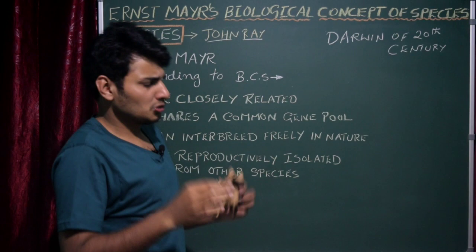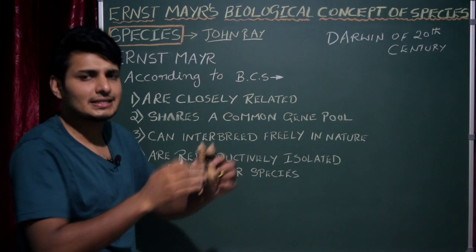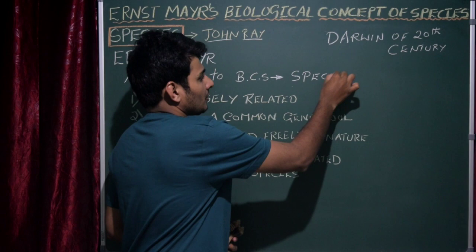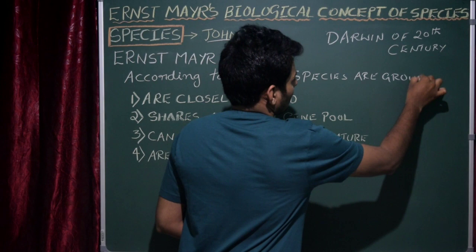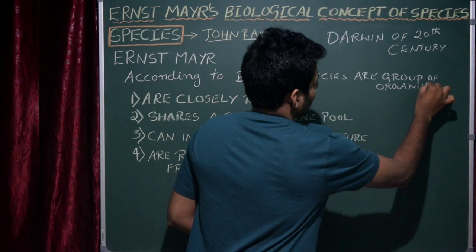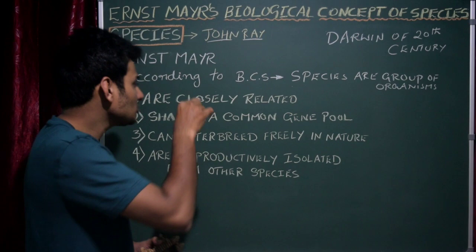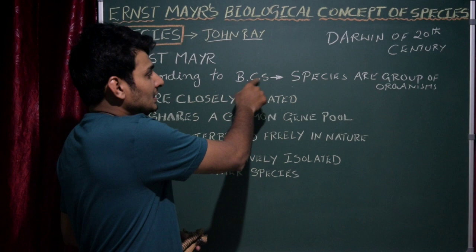According to Ernst Mayer's biological concept of species (BCS), species are groups of organisms which are closely related. This is the first theory of BCS.